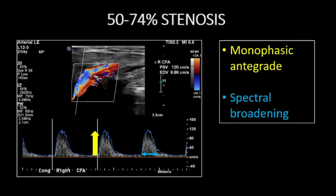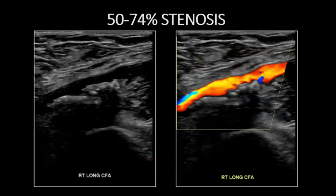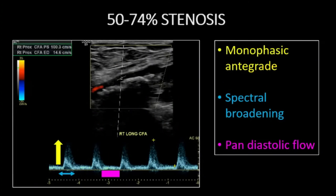In another example of greater than 50% stenotic disease, again we see a monophasic flow pattern with turbulent flow manifesting as spectral broadening. Pandiastolic flow is present. The systolic upstroke remains sharp. There is loss of the early diastolic flow reversal. Grayscale and color doppler confirm at least 50% stenosis or greater.